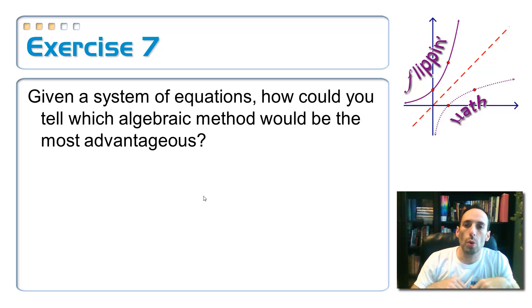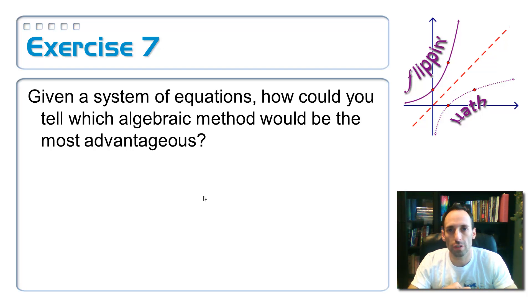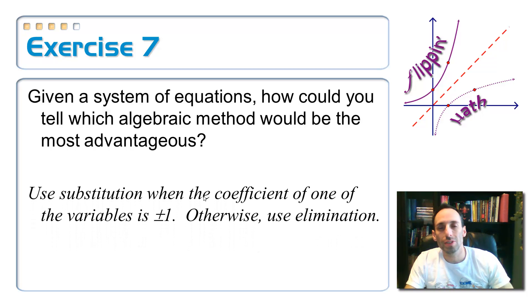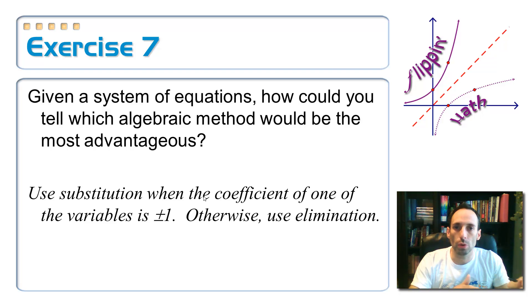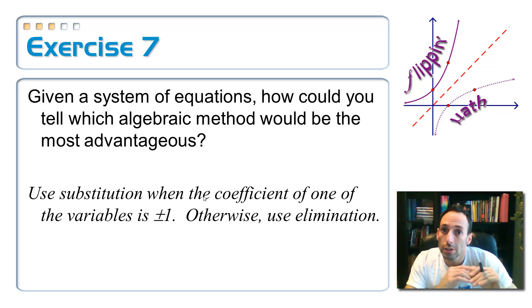Here's a thought question. Given any system of equations, how could you tell which algebraic method would be most advantageous? How would I know when to do substitution versus elimination? I would do substitution only if it's convenient, meaning the leading coefficient of one of the variables is either positive or negative one — because then I could get x or y by itself easily without fractions. If one of the leading coefficients is not one or negative one, just use elimination.